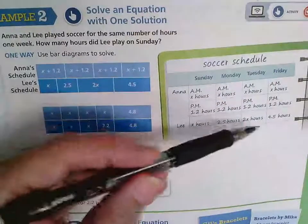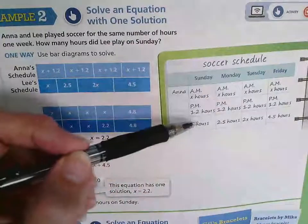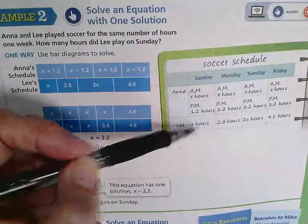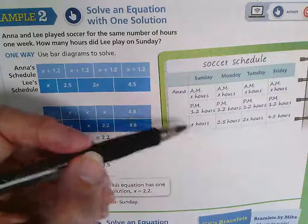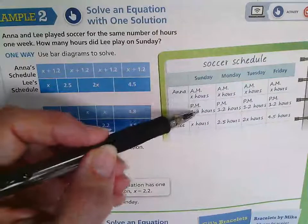Lee plays the same number of days, but he only plays one time, I guess. But Anna's is divided up.